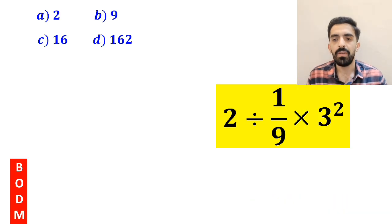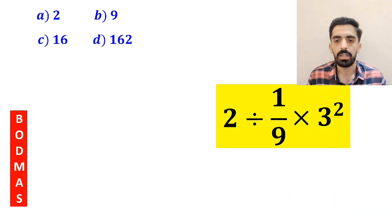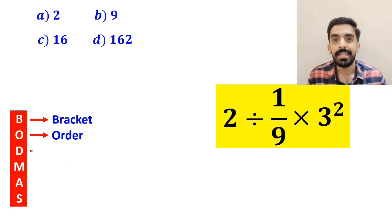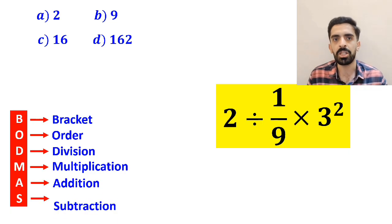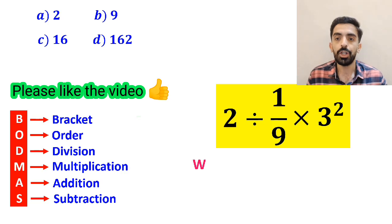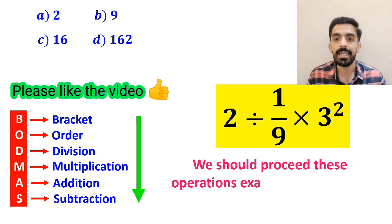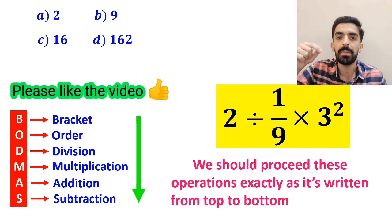To solve this question, we must follow the BODMAS rule. In this rule, B stands for bracket, O stands for order, D stands for division, M stands for multiplication, A stands for addition, and S stands for subtraction. We should proceed these operations exactly as it's written from top to bottom step by step.